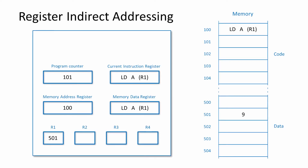If the operand is a register containing a memory address, this is known as register indirect mode. You can see that this instruction does indeed need to access the memory, but only once. The speed is therefore similar to memory direct addressing.